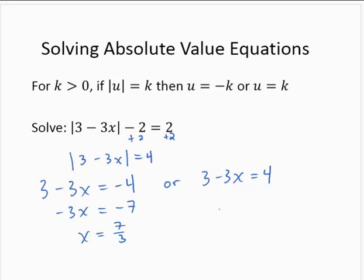And for the second equation, same steps — subtracting the 3 gives negative 3x equals 1, and dividing by negative 3, x is negative 1 third. So the equation has two solutions: negative 1 third and positive 7 thirds.